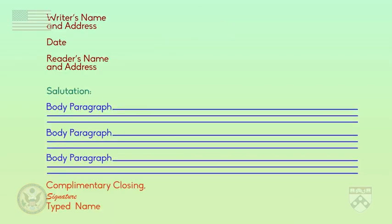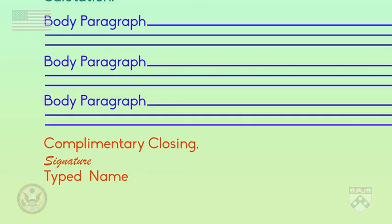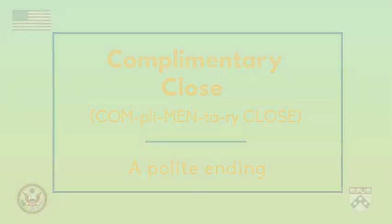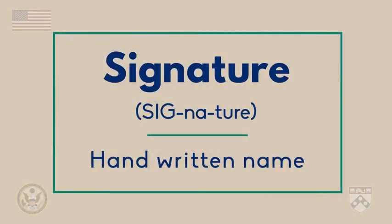The end of the letter includes a complimentary close, a signature, and the applicant's typed name. The complimentary close that is used most often is sincerely followed by a comma. The signature is usually handwritten by the applicant followed by the typed name.